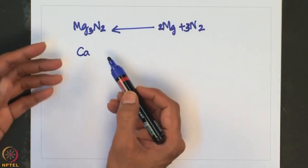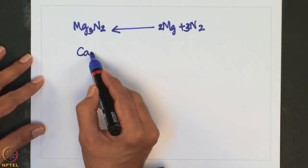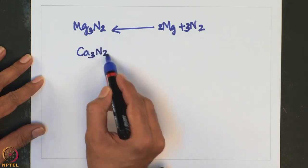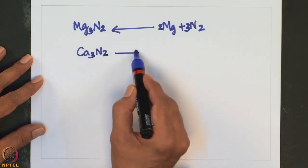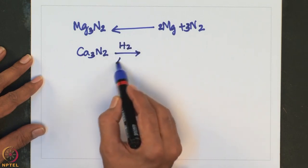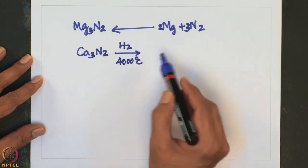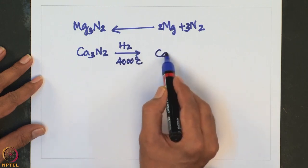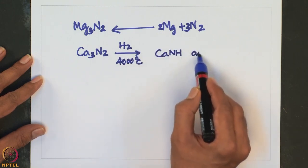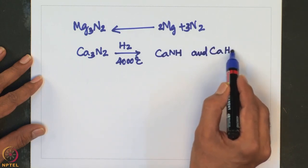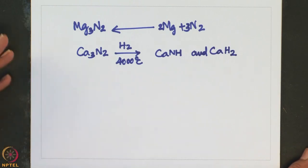Calcium nitride reacts with hydrogen gas at 400°C to produce CaNH and CaH2 (calcium hydride). Calcium nitride can also be prepared by directly combining calcium with nitrogen. Beryllium nitride melts at 2200°C and is used as a refractory material.